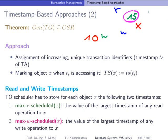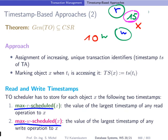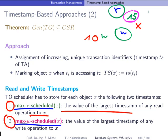For every transaction we store one timestamp as an identifier. And for every object X in our scheduler we store two timestamps: one called max R scheduled and one called max W scheduled, corresponding to the read and write timestamps. These correspond to the largest timestamp of any read operation on X, in the case of max R, and any write operation on X, in the case of max W.